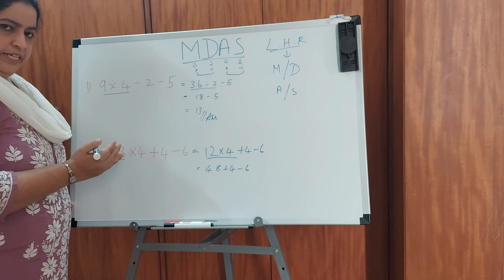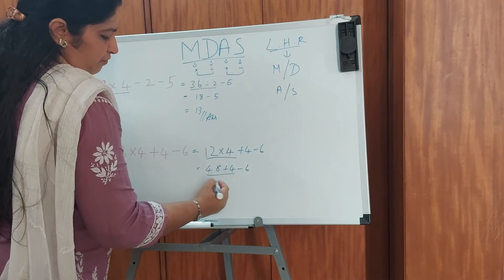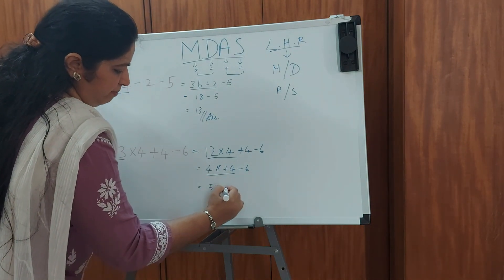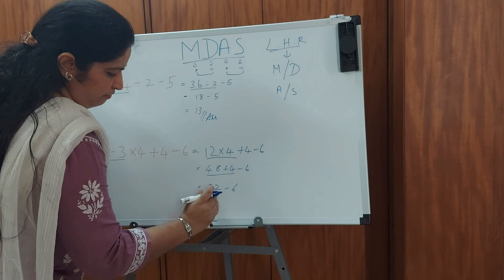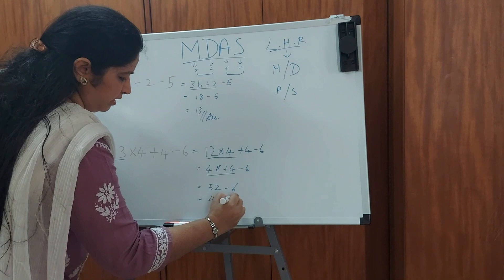So first we did division, then we did multiplication. Now as you could see, we have addition first. So 48 plus 4. What is 48 plus 4? 52. And then minus 6. Then we do the subtraction 52 minus 6 which is 46. So this is our answer.